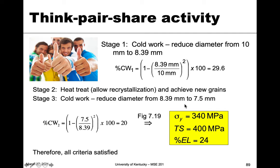By doing a two-stage cold work process with a heat treatment in between, we satisfy both strength and ductility requirements. This is a case where you must balance strength and ductility and may need to incorporate heat treatment. It also illustrates why hot rolling can be necessary — hot rolling at elevated temperatures doesn't allow strain energy to remain in the material, so there's no strain hardening. This allows more rolling without intermediate heat treatment while maintaining material properties.